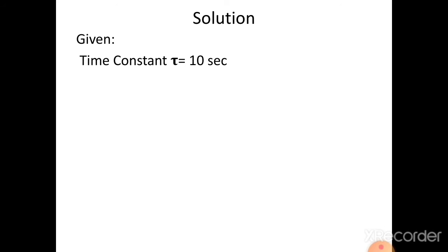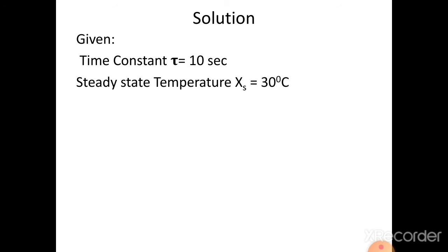Given data: time constant tau equals 10 seconds, steady state temperature x(s) equals 30 degrees centigrade. The amplitude A, the change in step input, A equals 60 degrees minus 30 degrees, which equals 30 degrees centigrade.